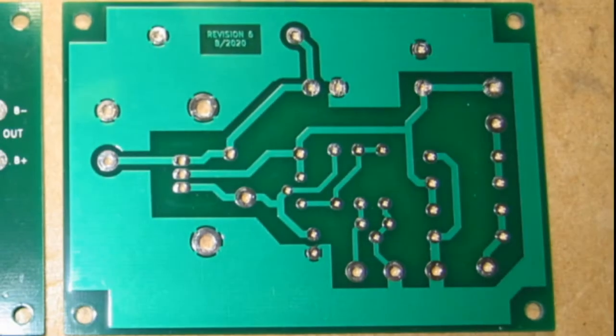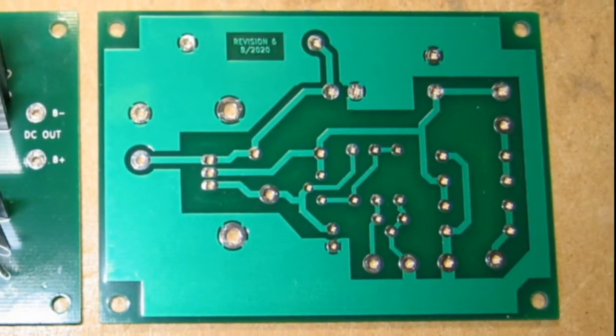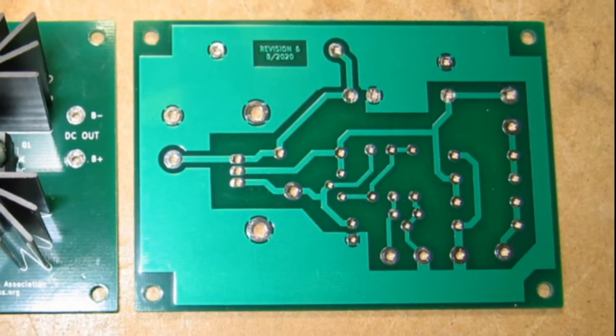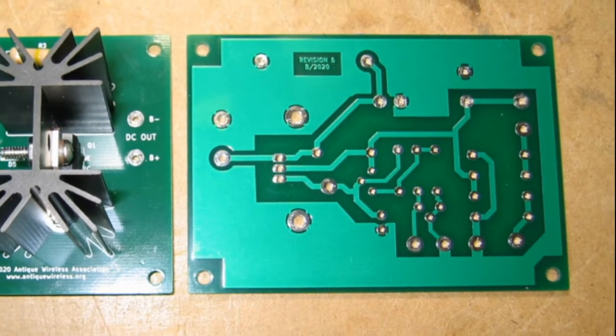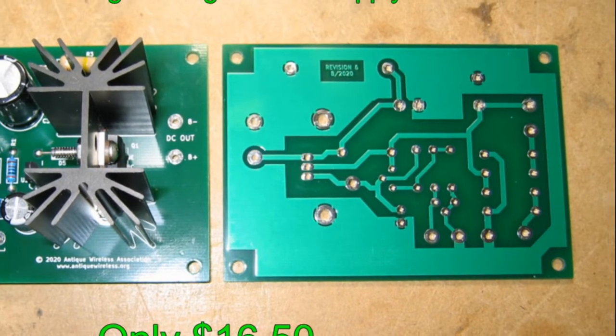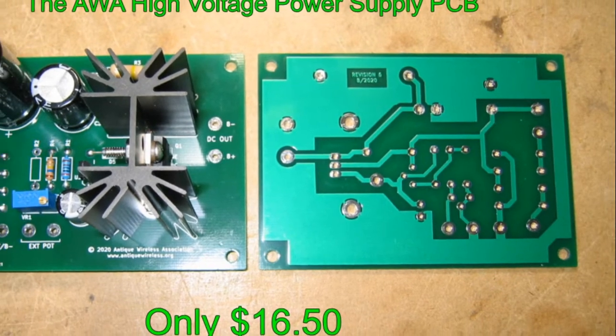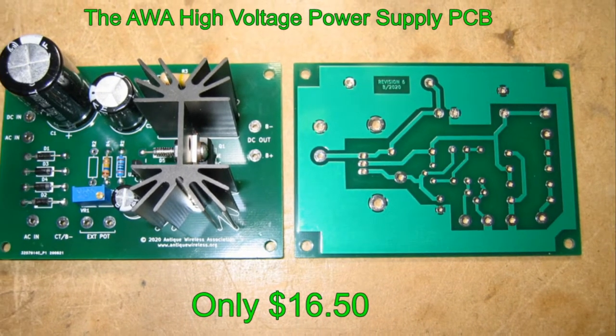Or for just $16.50, you can order the Antique Wireless Association High Voltage Power Supply Printed Circuit Board. Add a handful of inexpensive parts and you'll have one sweet supply for your projects.